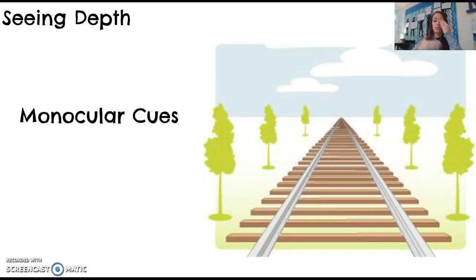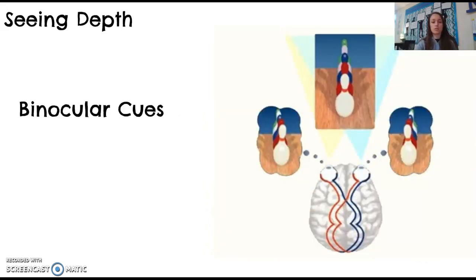For binocular cues, you'll need two eyes to interpret how far away something is. Bi means two. Binocular cues are when you're using two eyes to interpret depth. When we're using two eyes, there is something unique that happens. Two eyes are getting two separate images, and because of retinal disparity—that's the space you have between your two eyes—the images going to your brain are slightly different. They're about an inch to an inch and a half to two inches offset of each other, depending on how big this space is here. You're getting a little bit to the right and a little bit to the left of whatever you're focused on.